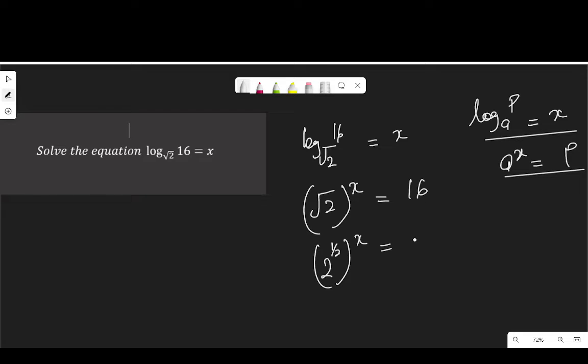Let me express 16 in index form. 16 in index form is 2 to the power of 4. Since 2 times 2 is 4, times 2 is 8, times 2 is 16. That means 16 is 2 to the power of 4.